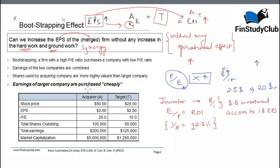Let's come back to the aspect of bootstrapping and understand when will bootstrapping happen. Bootstrapping means the increase in the EPS of the merged entity in comparison to the pre-merger scenario. Bootstrapping will happen when a higher PE ratio firm purchases a company with a lower PE. Therefore, for bootstrapping to happen, the PE of the acquirer has to be more than the PE of the target.